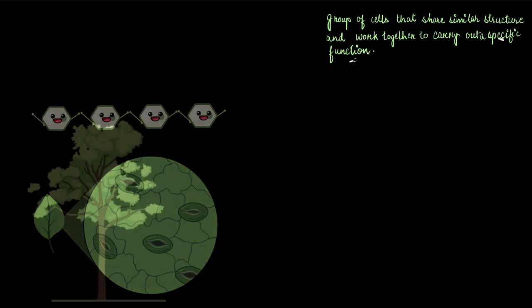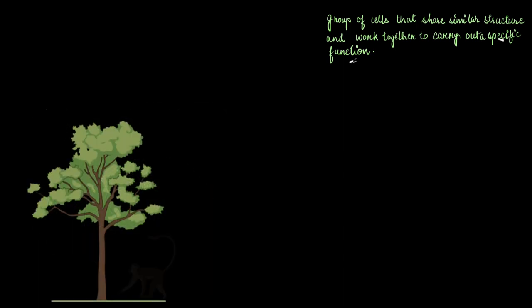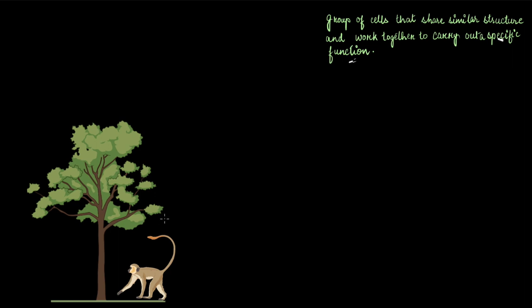Animals are constantly on the move - moving in search of food, shelter, or a potential mate. But that's not the case for plants. They have a very laid-back, stationary kind of life.